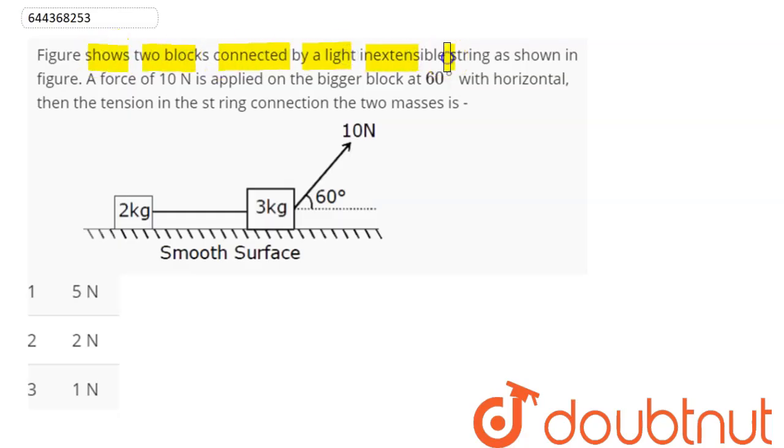connected by light inextensible string as shown in figure. A force of 10 newton is applied on the bigger block at 60 degrees with horizontal. Then tension in the string connecting the two masses is - so we can say here